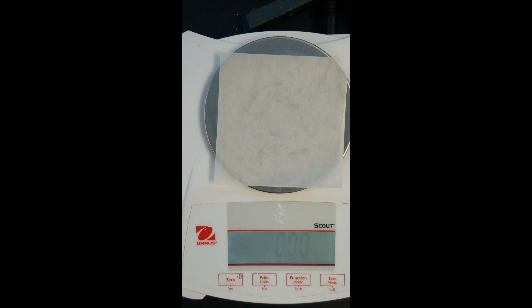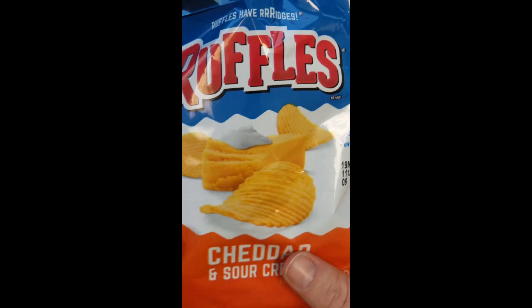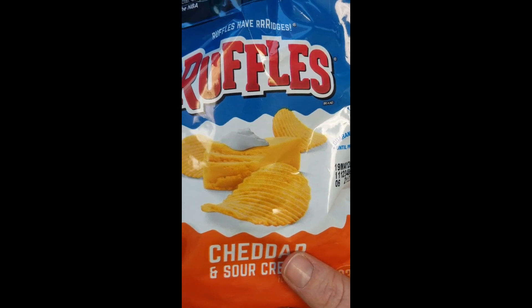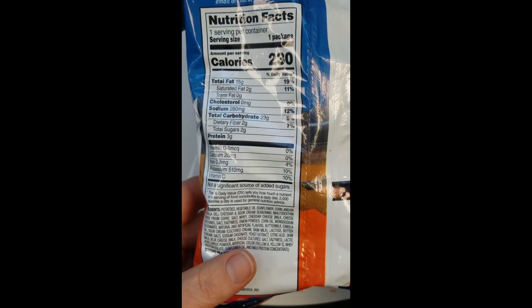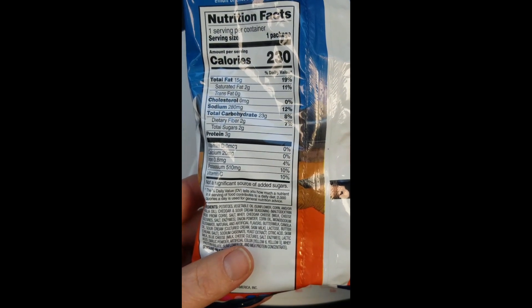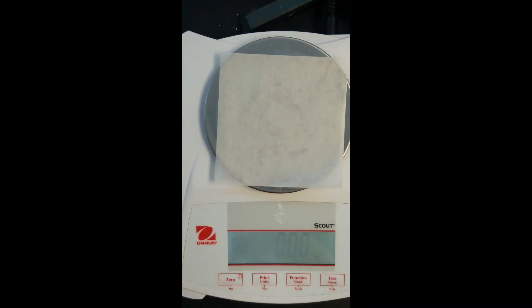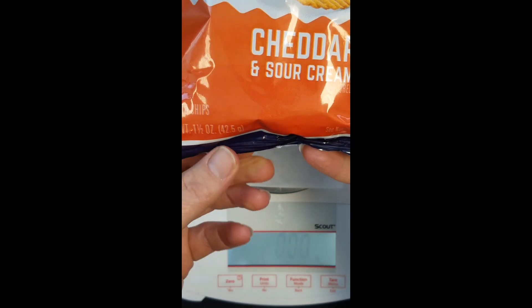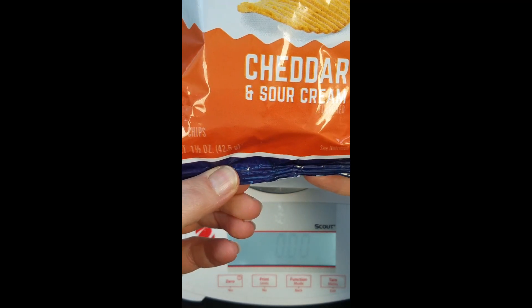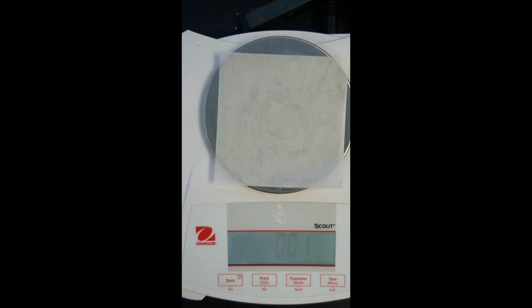We're now going to take about five grams and this mass doesn't have to be exact. We're going to use Ruffles. And so we have our label and this is a 42.5 gram package. We weigh out about five grams of chips.